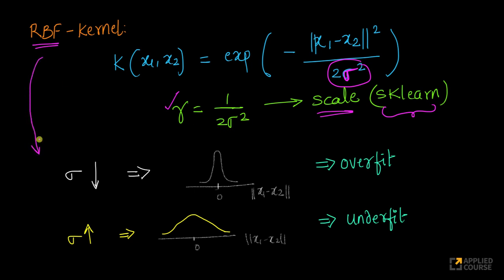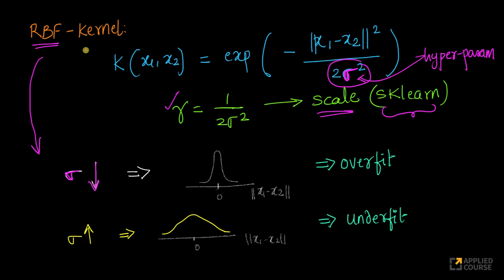In an RBF kernel, the main hyperparameter we can play with is sigma. This sigma is a hyperparameter we can tune to either overfit or underfit. If sigma is small — if we reduce sigma — the RBF kernel itself becomes narrower and narrower when plotted.